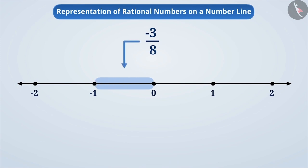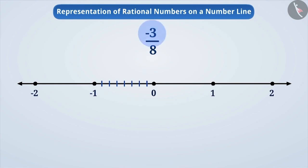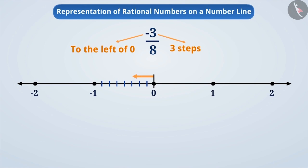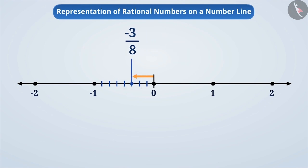Since this rational number's denominator is 8, we will divide the distance between 0 and minus 1 into 8 equal parts. The numerator is minus 3: the minus sign shows that we have to move to the left of 0, and 3 shows that we have to move 3 steps. In this way, we will move 3 steps to the left of 0. The point that we reach will be minus 3 by 8. This is how we represent minus 3 by 8 on the number line.